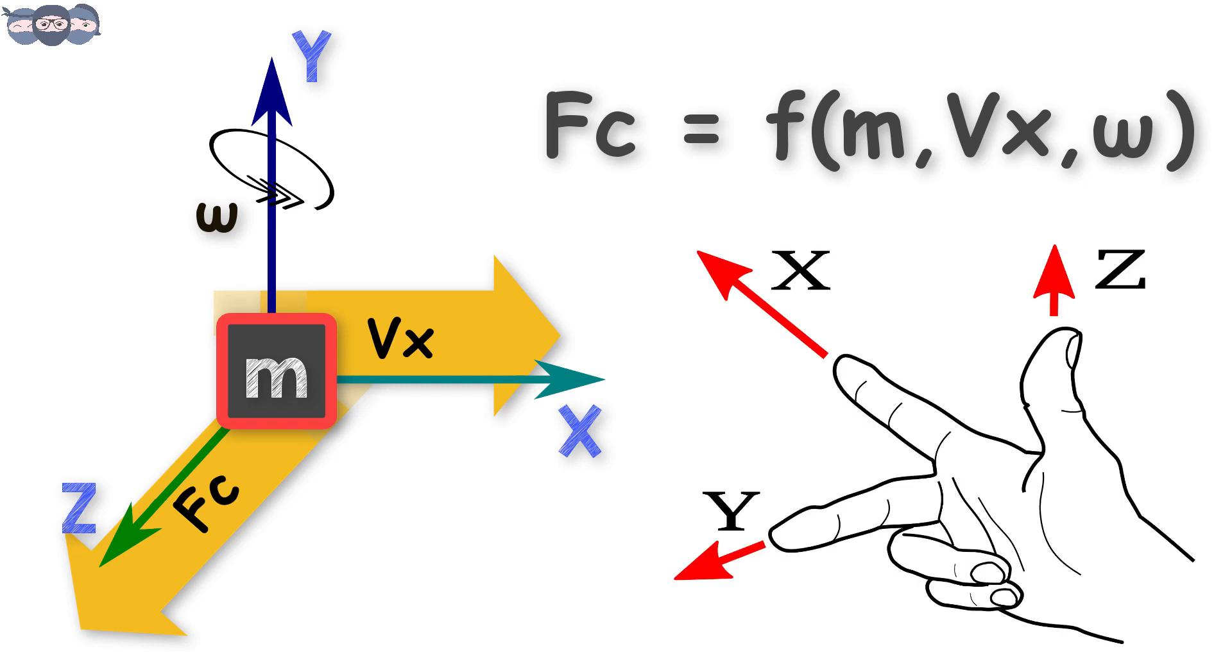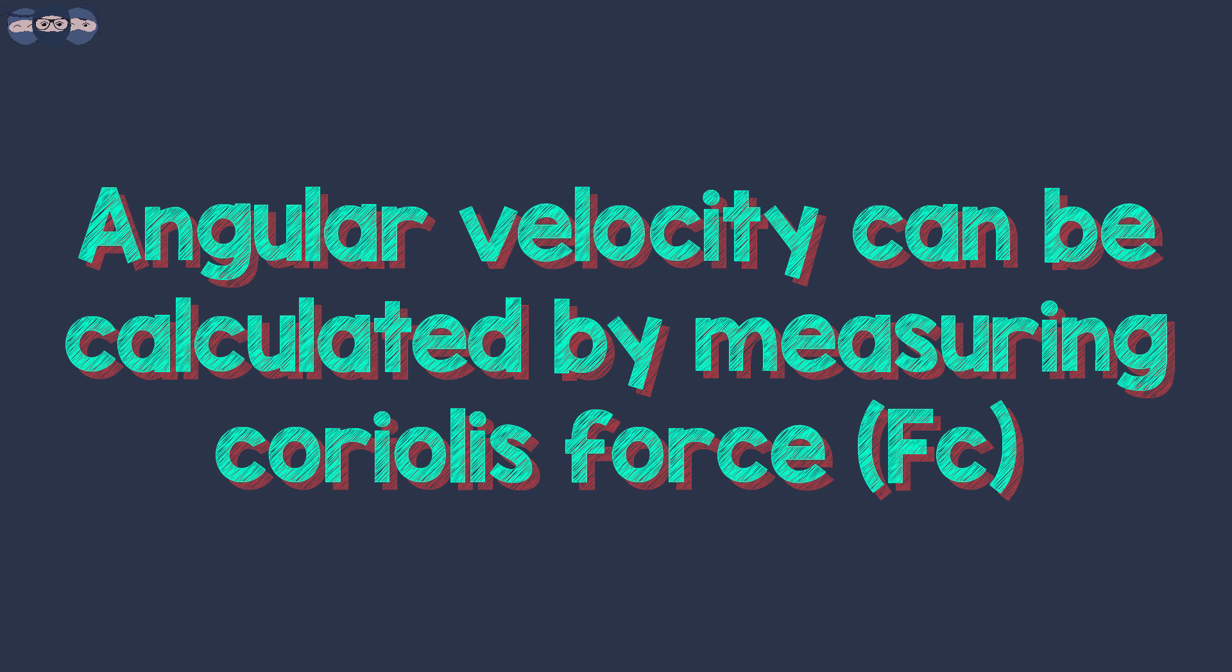The direction of this force can be found out using the right-hand rule. For the mass m shown in the figure, the Coriolis force acts in the z direction towards the viewer. Once we understand this principle, we can calculate the angular velocity by measuring the Coriolis force.